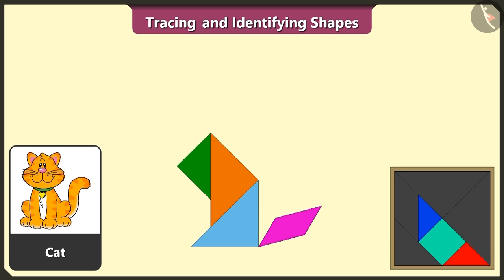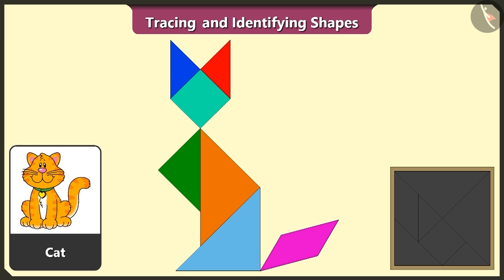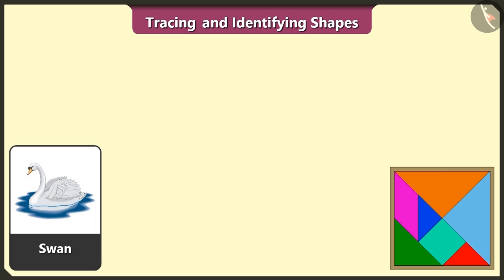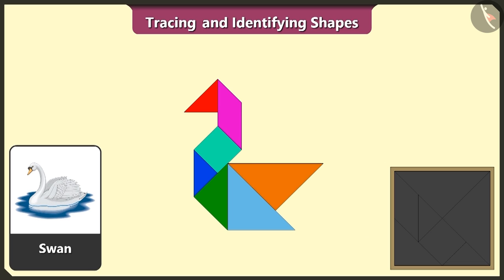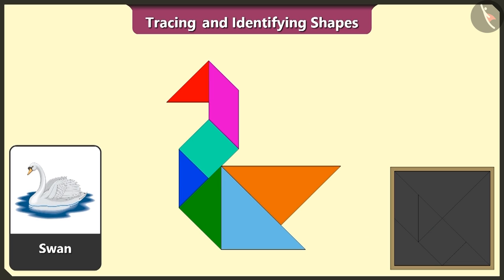See, the cat is ready! This is a swan. Now we will make a swan using four triangles, one square, one quadrilateral, and one triangle. The swan is also ready — this is really interesting!